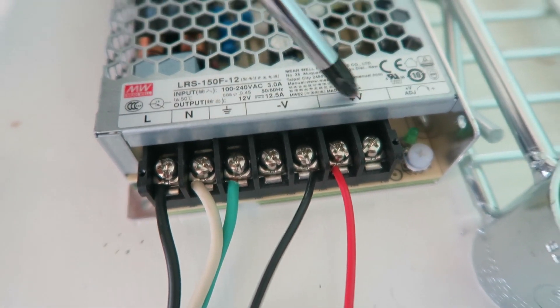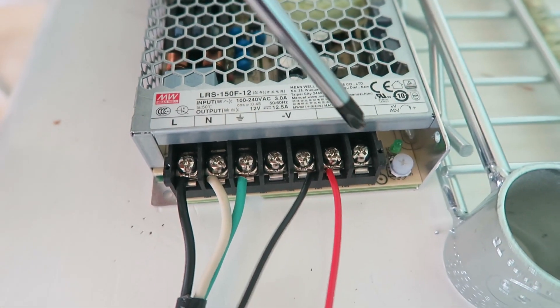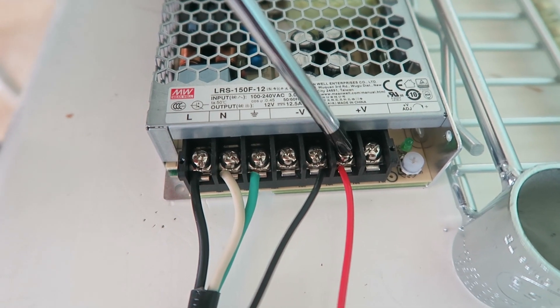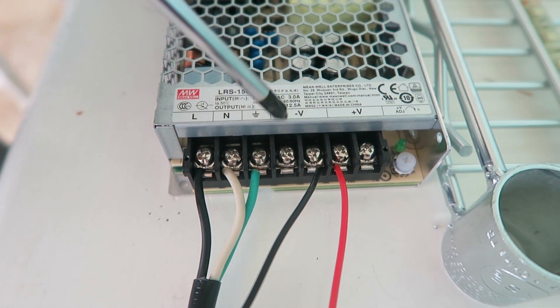And also here you see V minus, V plus. So you want your red wire to be on one of these V plus. And the other one you want on the minuses. The minus.